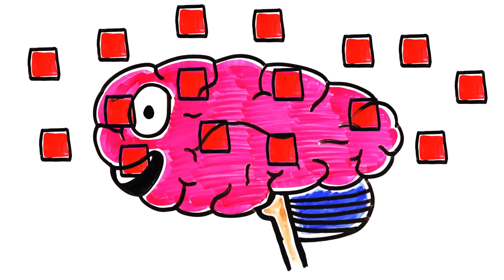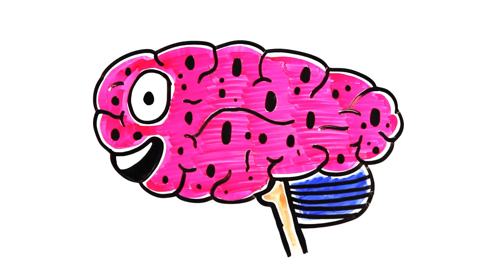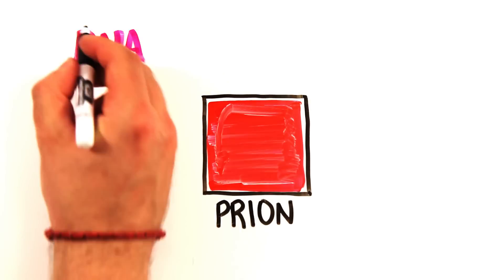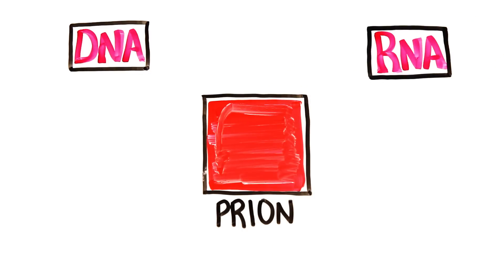In particular, prion disease creates holes in the brain, giving it a spongiform appearance and ultimately causing death. But unlike viruses, bacteria, fungi, or parasitic infections which contain DNA or RNA, prions don't, meaning they can't be killed with radiation or heat.